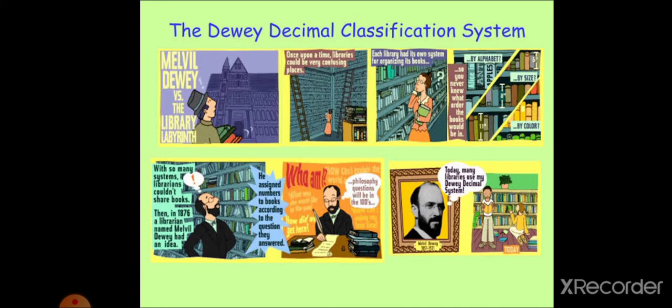First of all, who was Melville Dewey? Melville Dewey was the person who devised Dewey Decimal Classification System. Once upon a time, libraries could be a very confusing place. Each library had its own system for organizing the books. So you never knew what order the books would be in. With so many systems, librarians could share books.